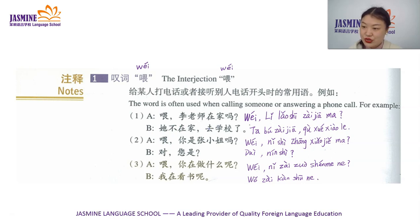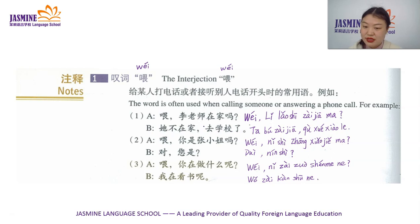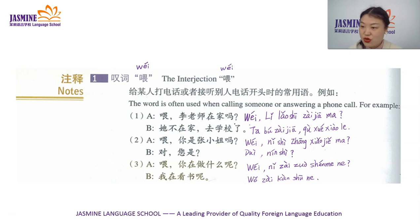去 means 'go', right? 学校 means 'school', so 去学校 means 'go to school'. So 去学校了 means she went to school. She is not at home; she went to school.